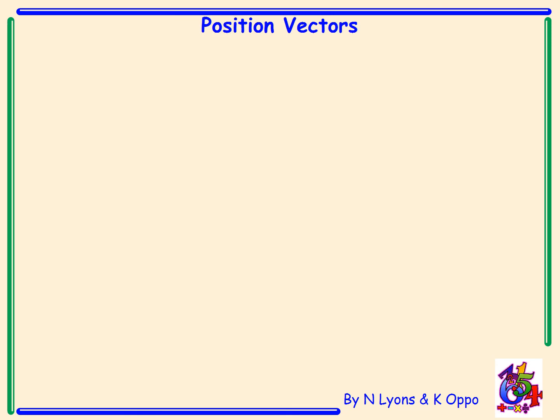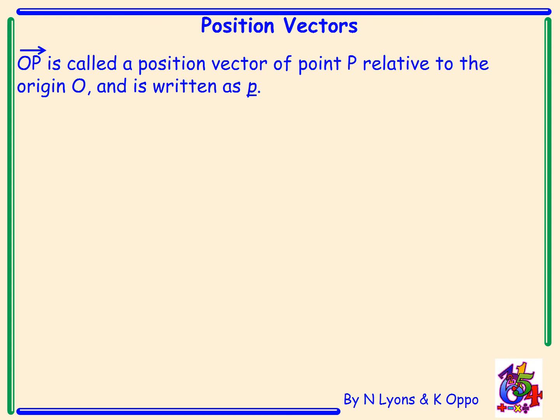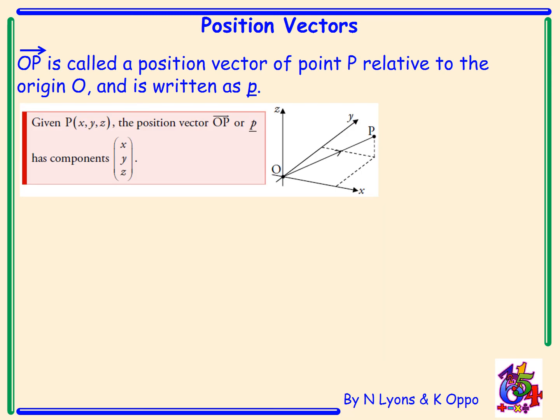The final thing we're going to look at today is position vectors. OP is called the position vector of point p relative to the origin o. Here we can see that point p has coordinates x, y, z, but we can get the components of position vector p by writing x, y, z vertically.